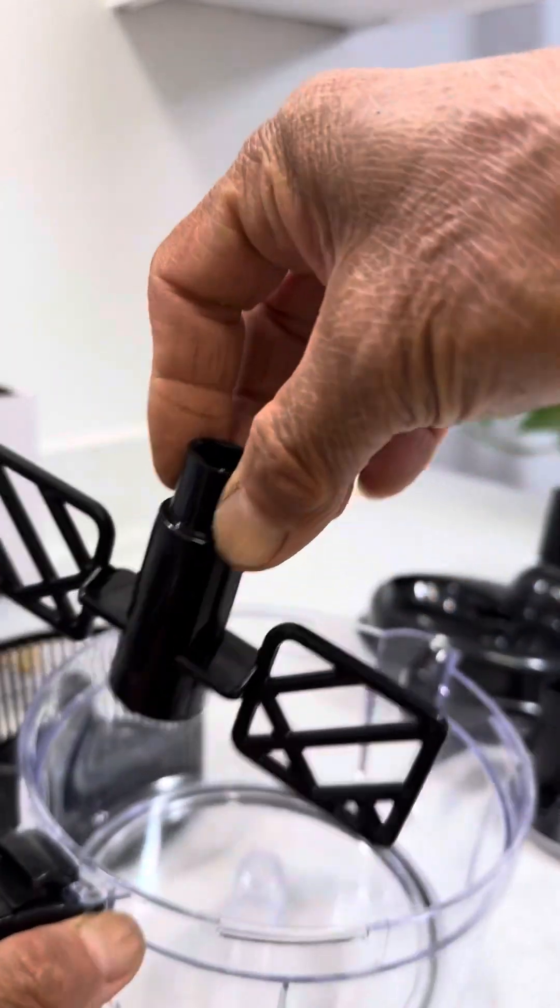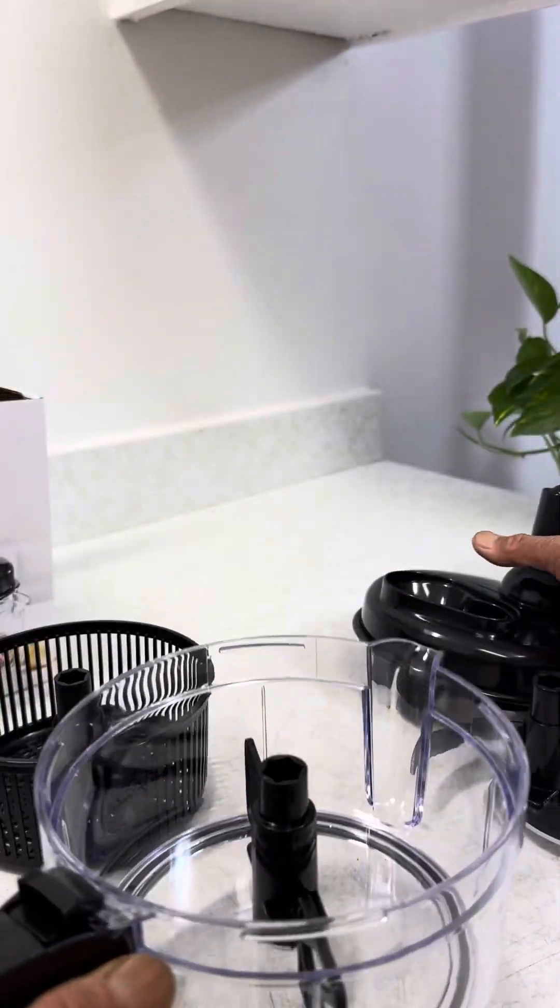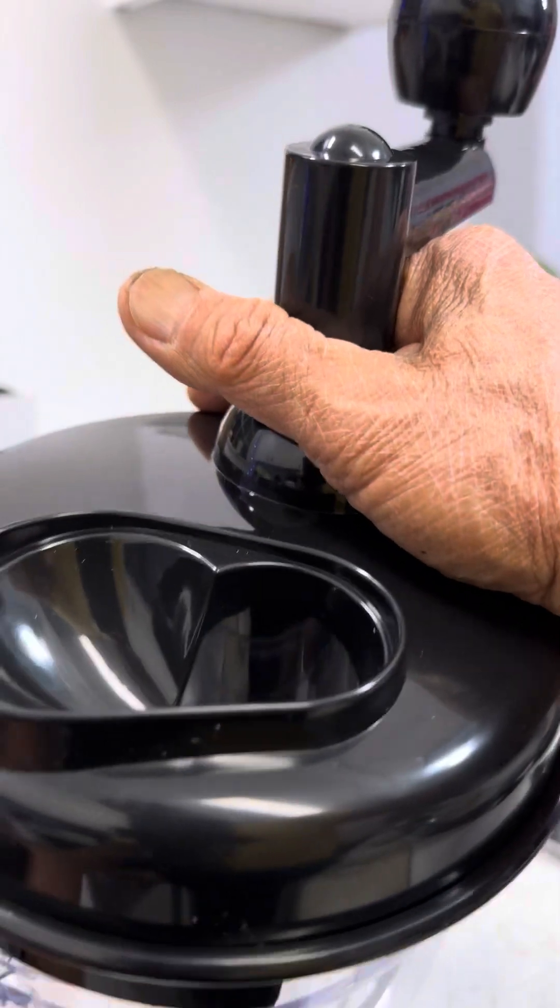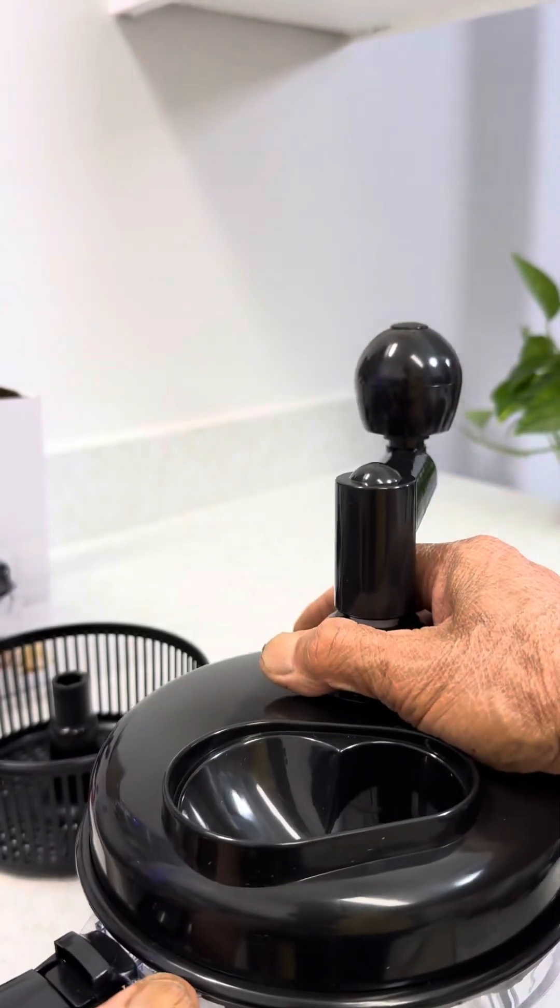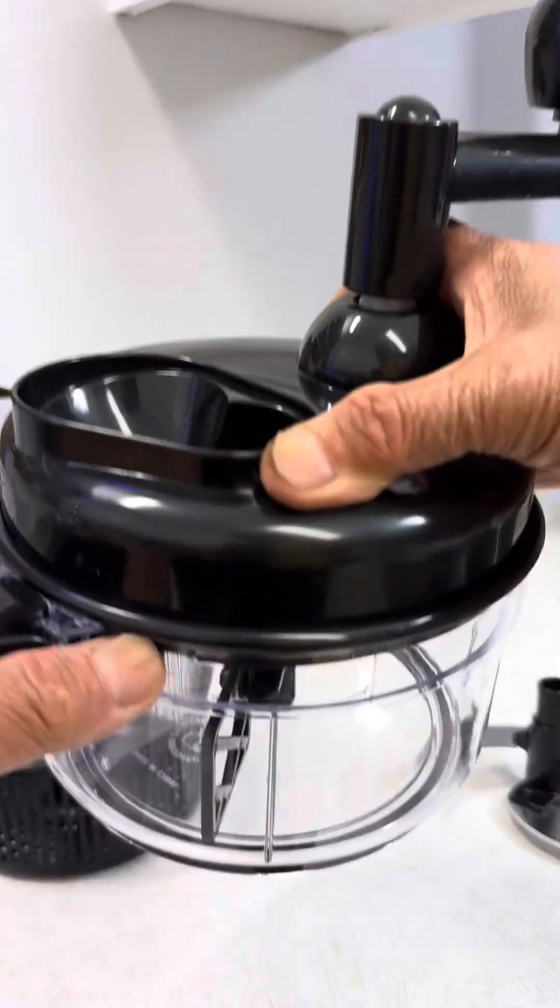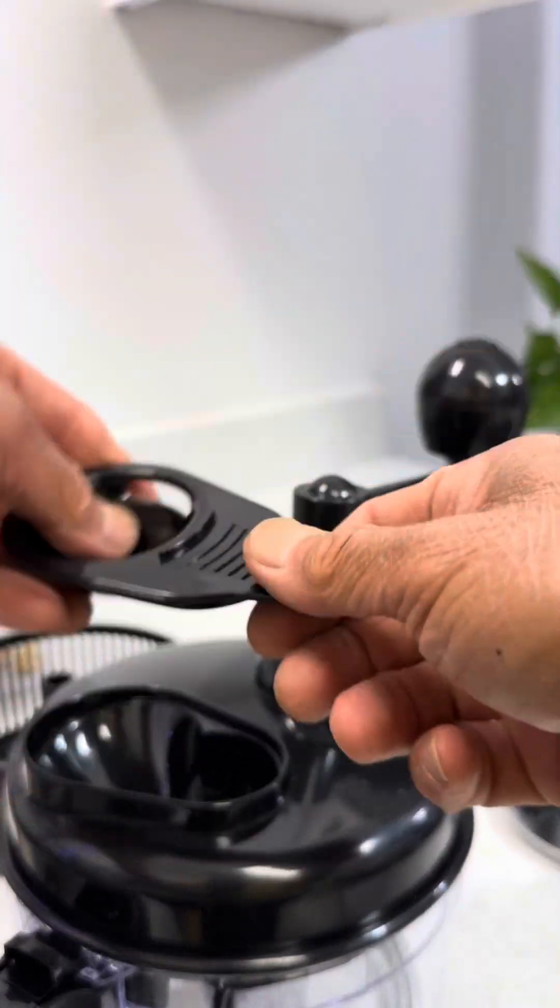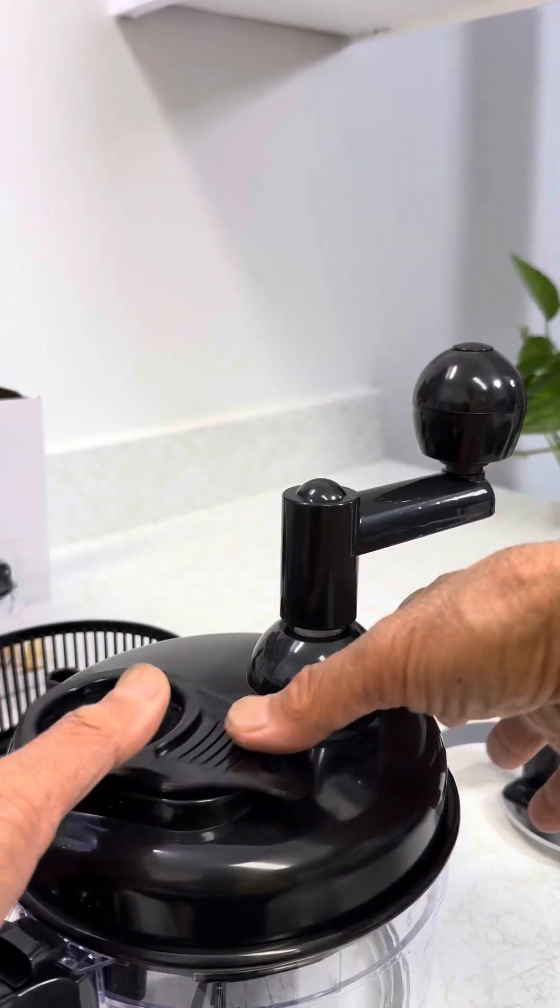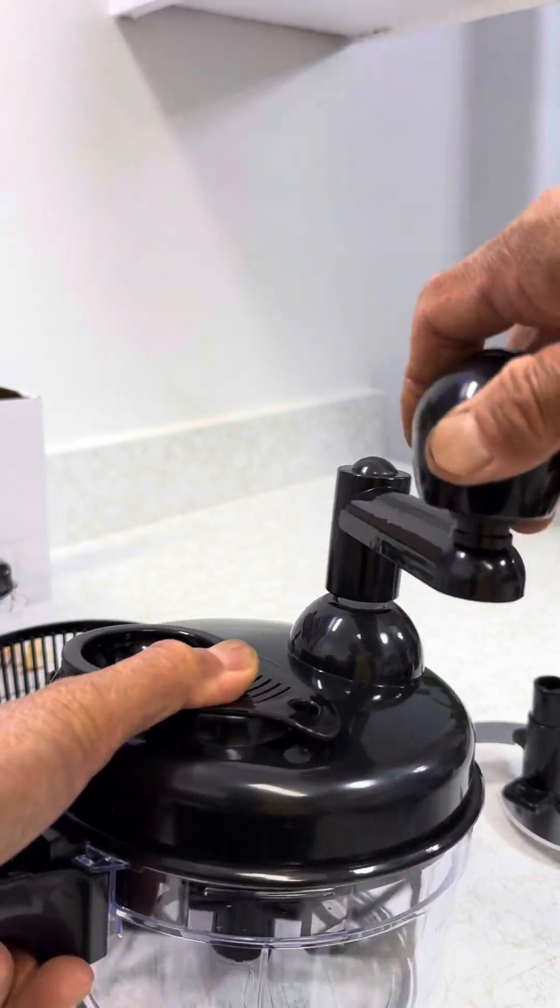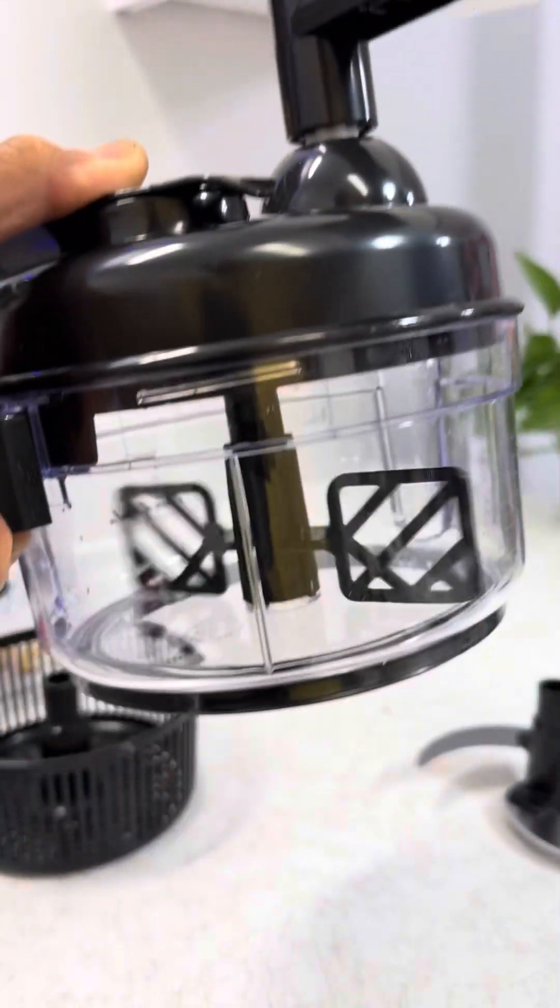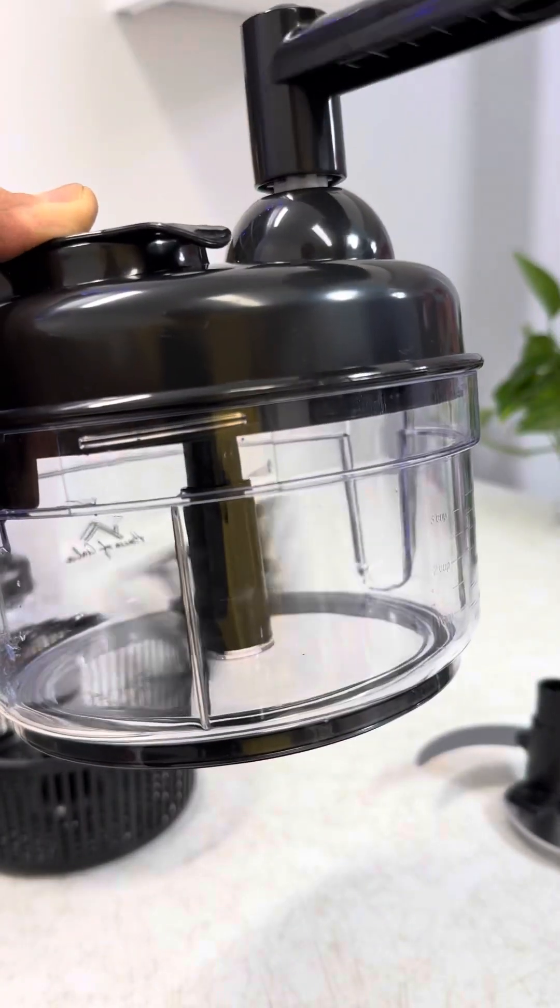And this is the spatula to stir it. Put it in the slot here or here like that. Then you put in the lid. You need to line up that spatula. Turn it clockwise to lock it. And this is the lid that you put in so it won't splash out. You can fold it like that and put in this pin. You see here—stir your content in there.